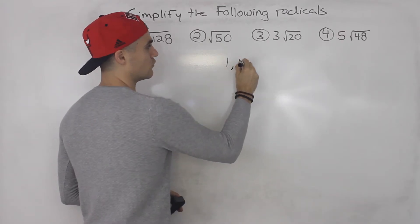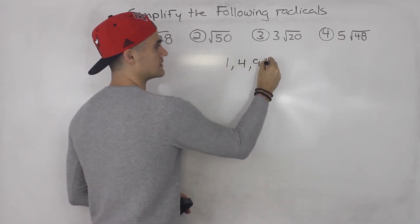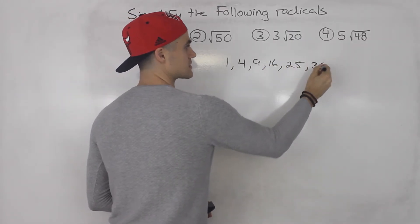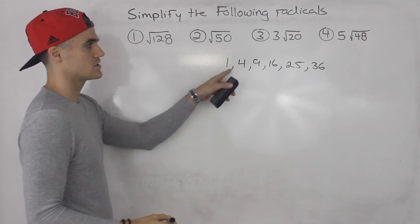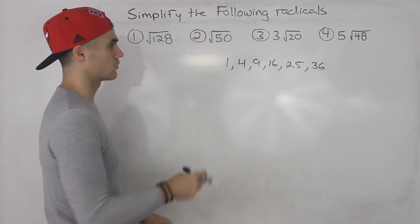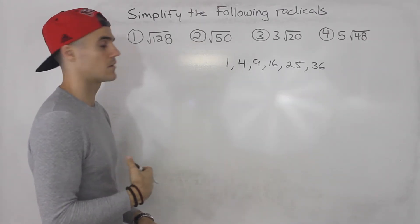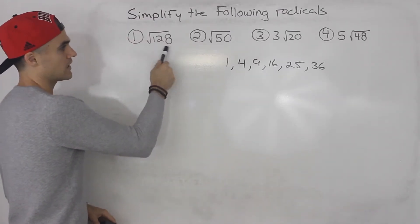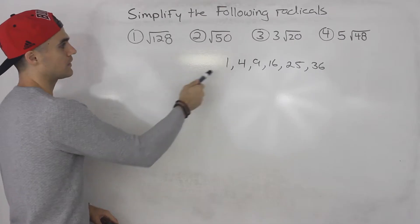1, 4, 9, 16, 25, 36, etc. Each of these numbers, if we square root them, we're going to get a whole number, an integer. So root 128, 128, what can we divide it by? Well, we could definitely divide it by four, but what's potentially a higher number that we can divide it by?